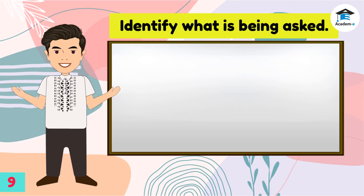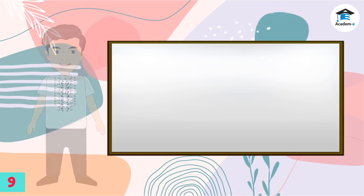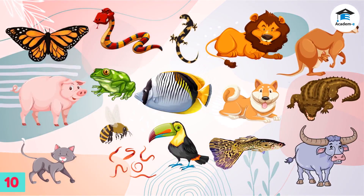When changes in the environment occur, some animals survive and reproduce while others die or move to new places. All organisms cause changes in the environment where they live. These changes can be harmful or beneficial to other organisms. Animal reproduction is important for the survival of all living things. Without a mechanism for reproduction, the life of animals would come to an end.